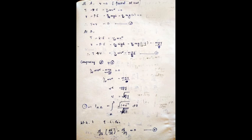Comparing the two energy expressions, half M V squared minus Mgy equals zero, so half M V squared equals Mgy. Canceling M, we get V squared equals 2gy, which gives V equals the square root of 2gy.